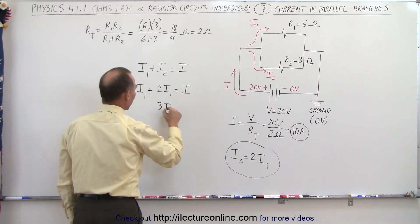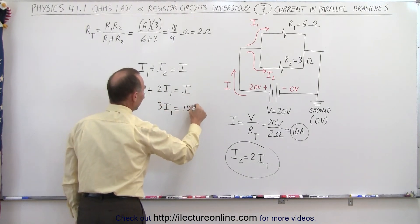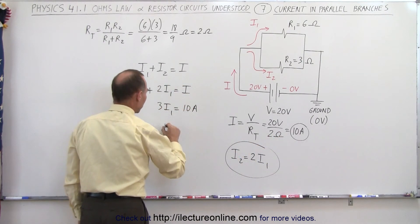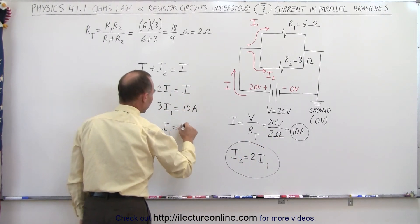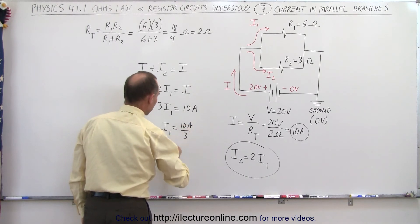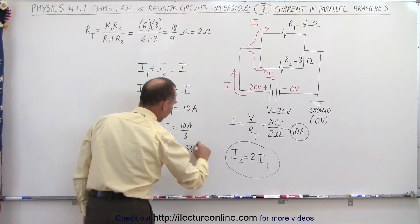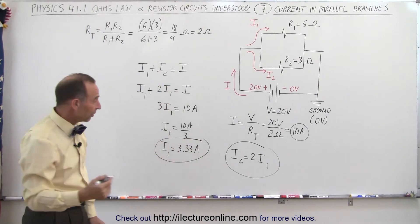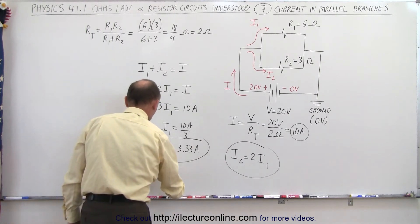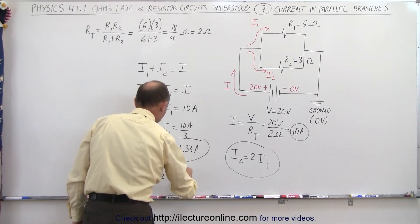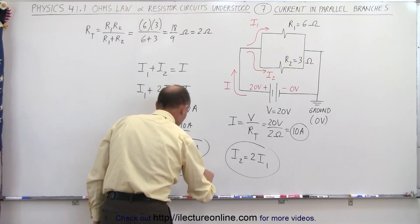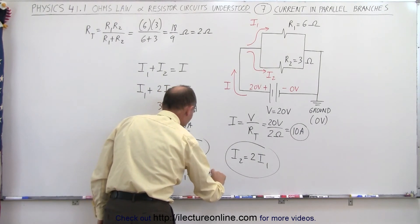Or 3 I1 must equal 10 amps, because that's what we calculated. Divide both sides by 3, we get I1 equals 10 amps divided by 3, so I1 must be 3.33 amps. Since we know that I2 is twice that amount, I2 equals 2 times I1, so therefore that's going to be twice 3.33 amps.